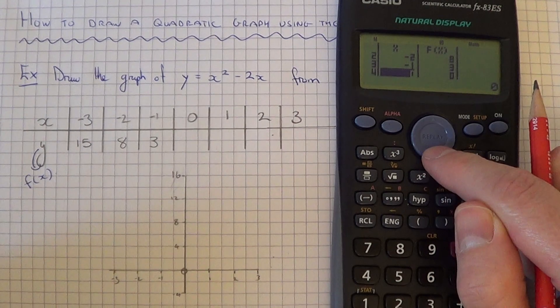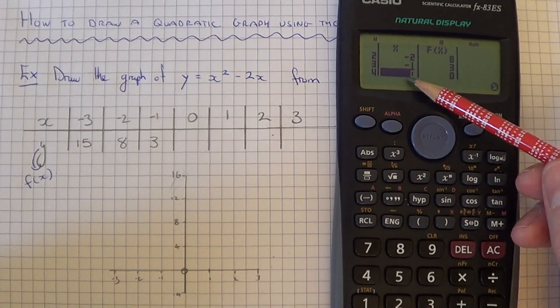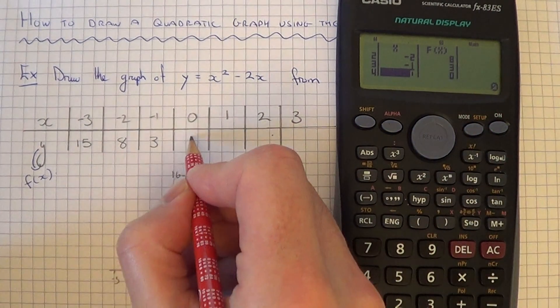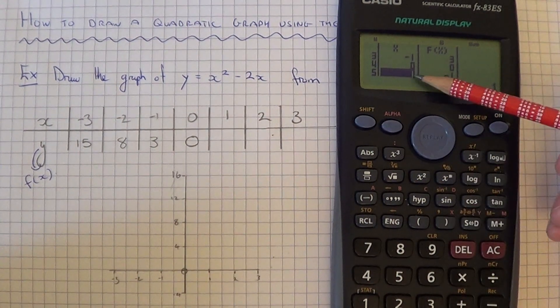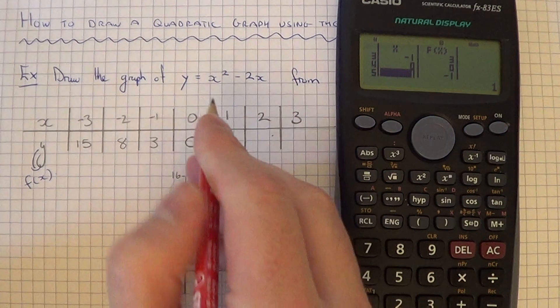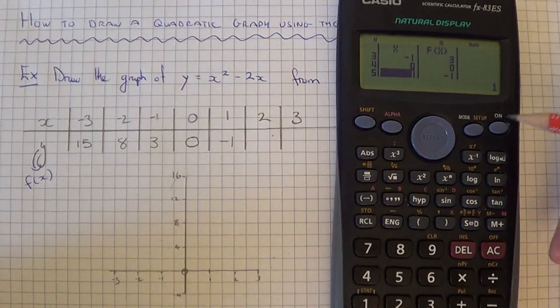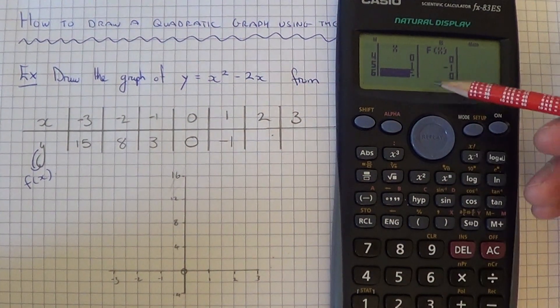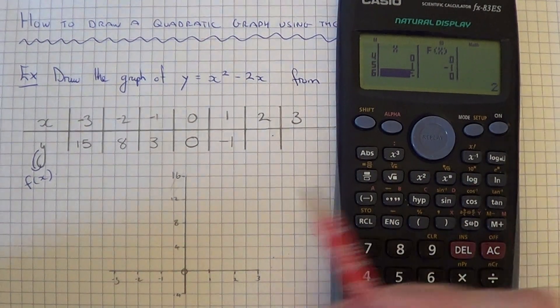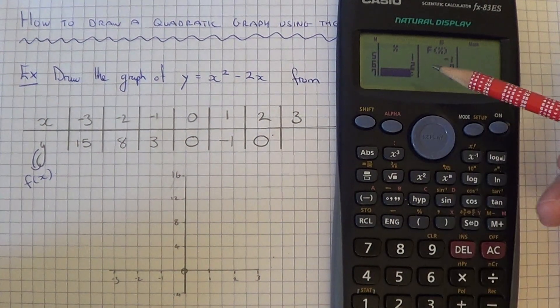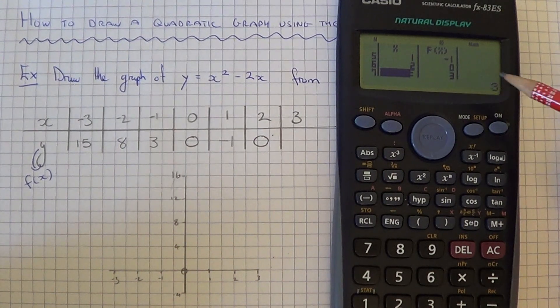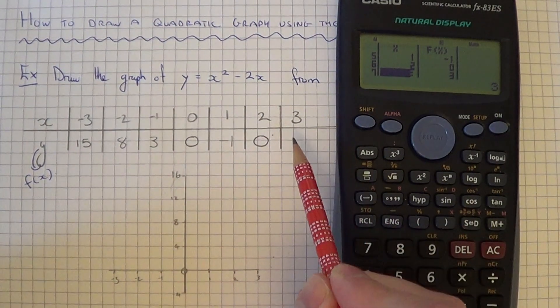Let's scroll down now. When the x coordinate is 0, the y coordinate is 0. When x is 1, the y coordinate is minus 1. When x is 2, the y coordinate again is 0. And the final coordinate, when x is 3, the y coordinate is also 3.